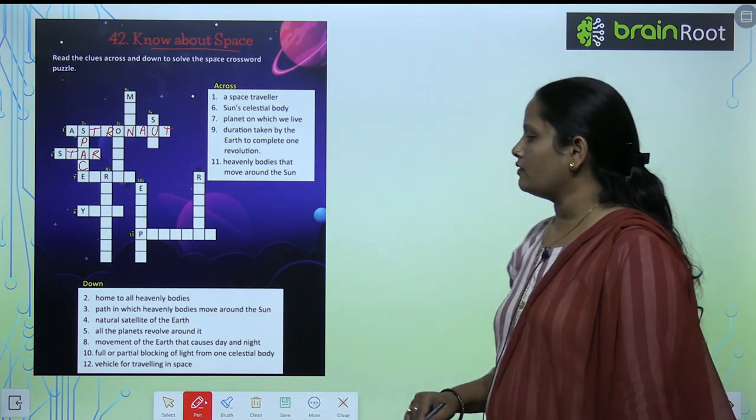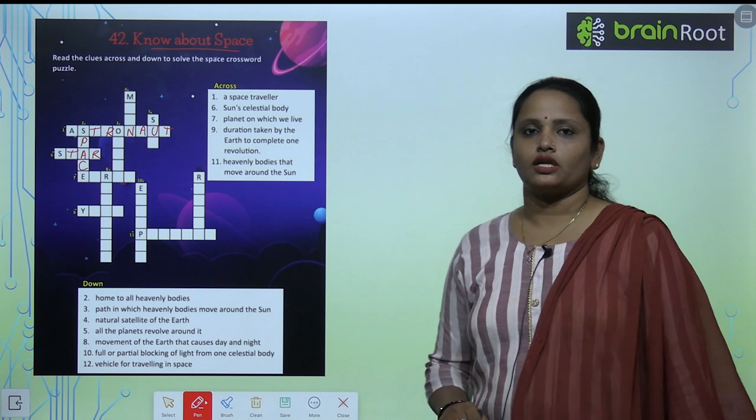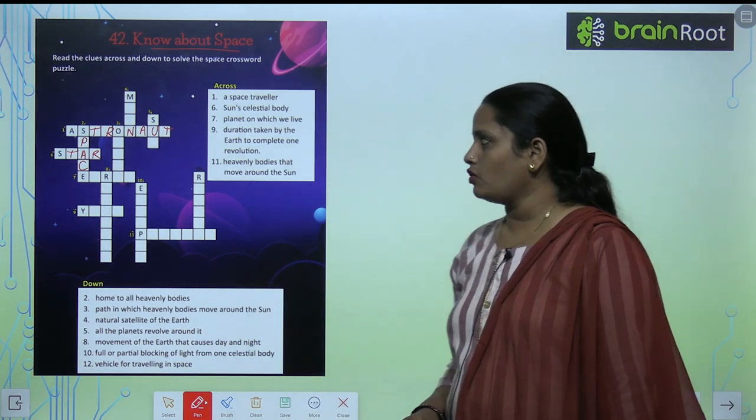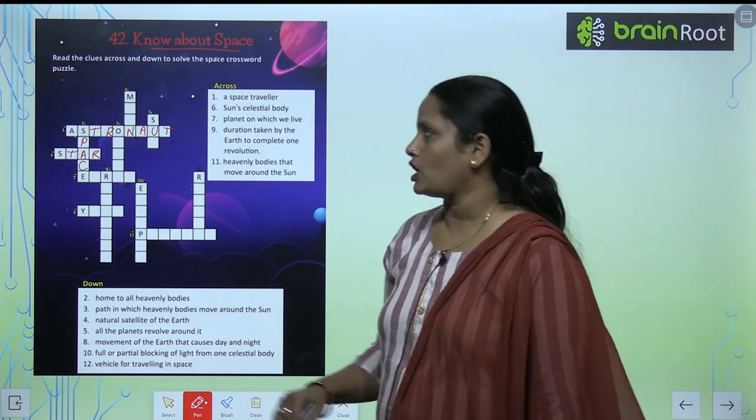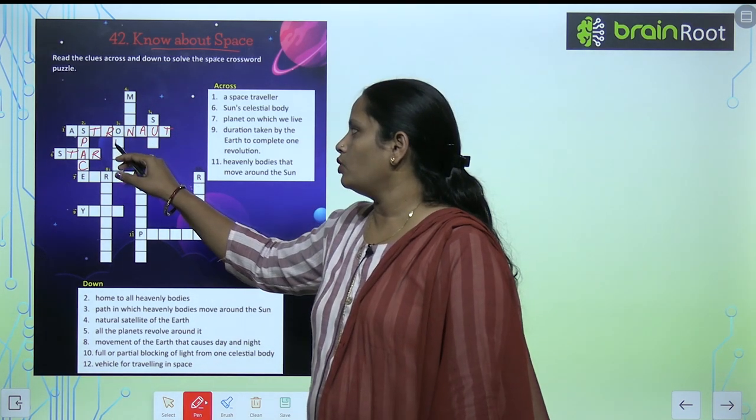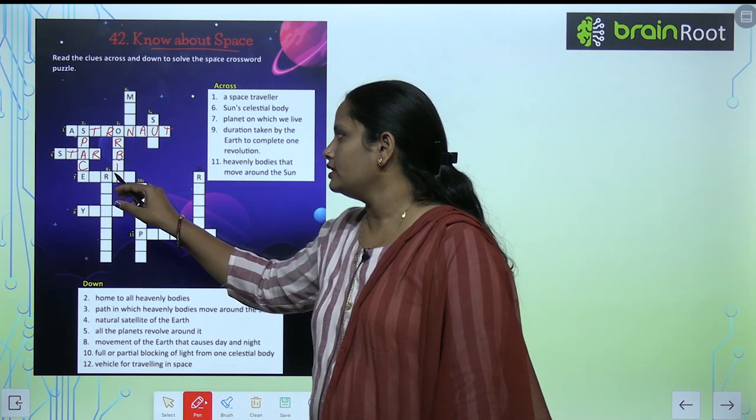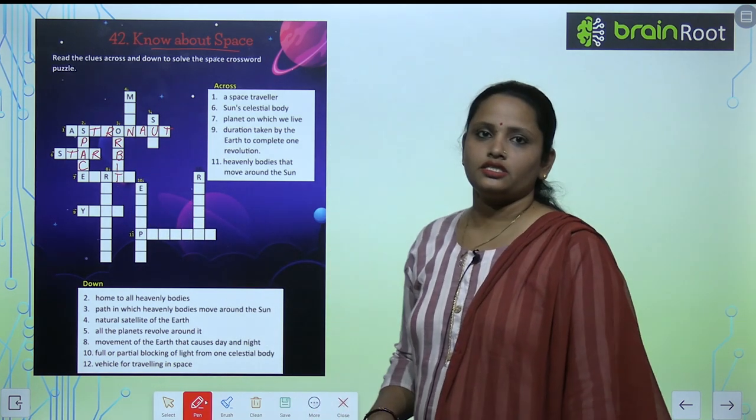Next, path in which heavenly bodies move around the sun. Us path ko kya kette hai? It is called O-R-B-I-T. It is orbit.